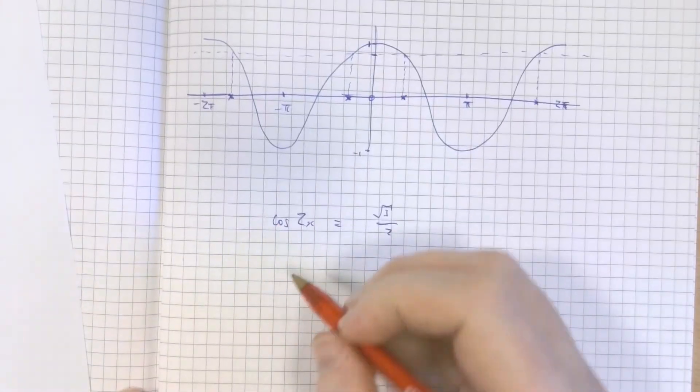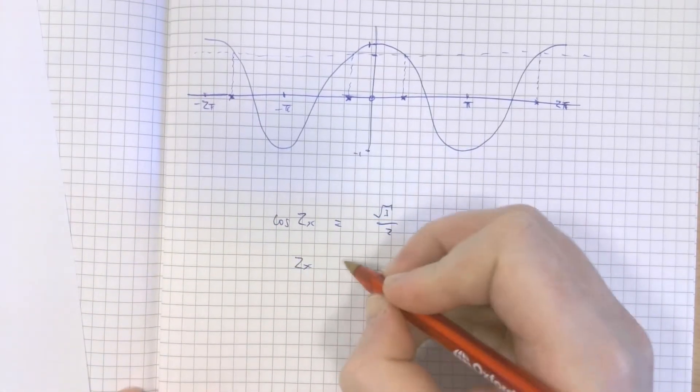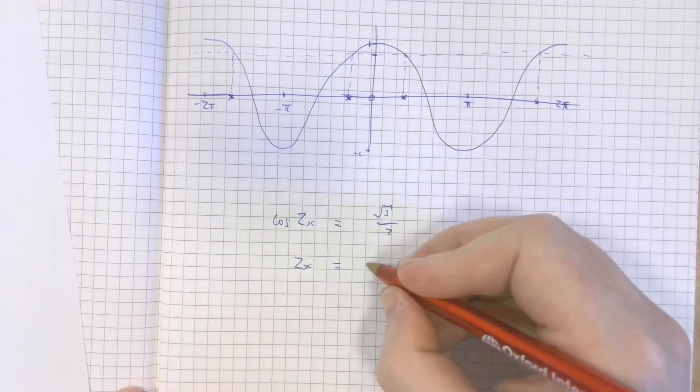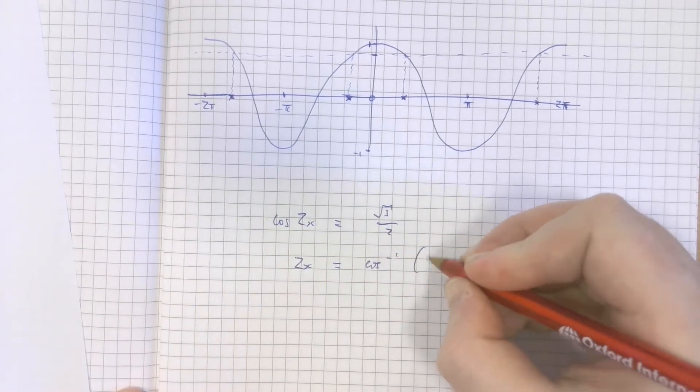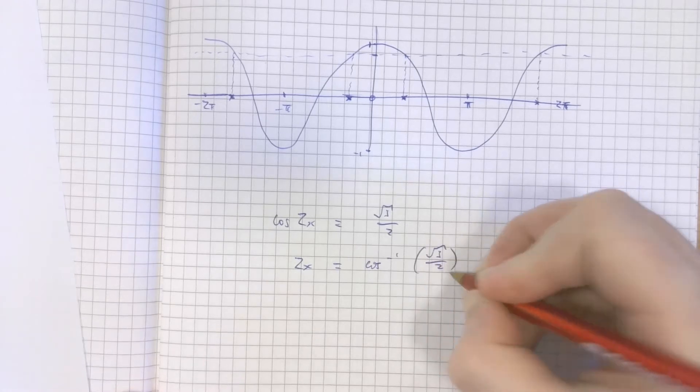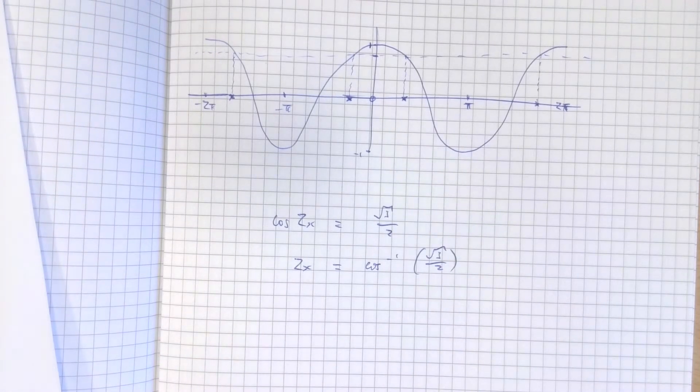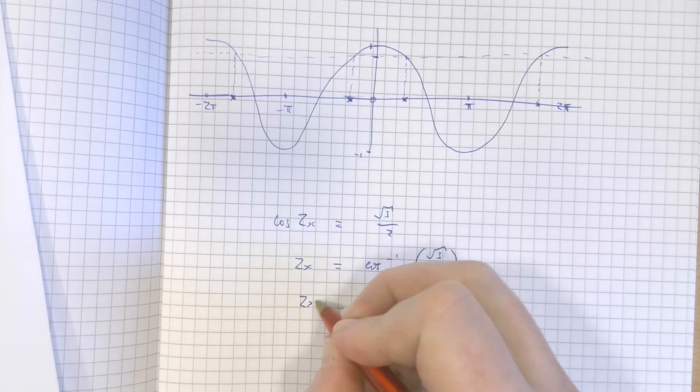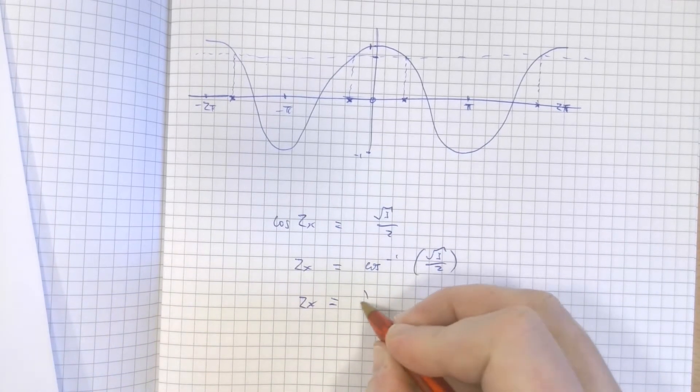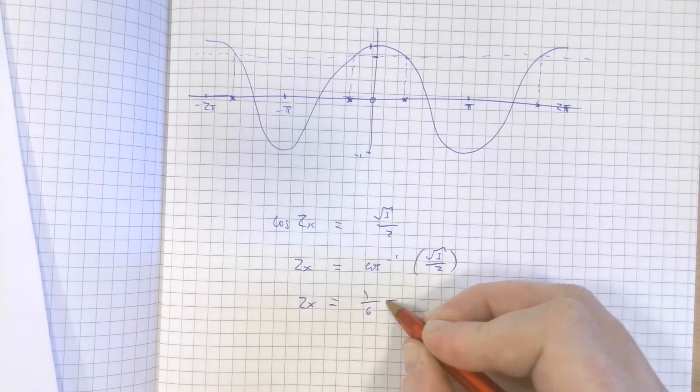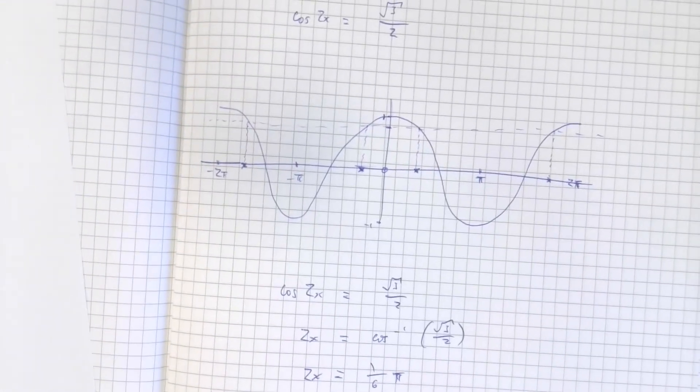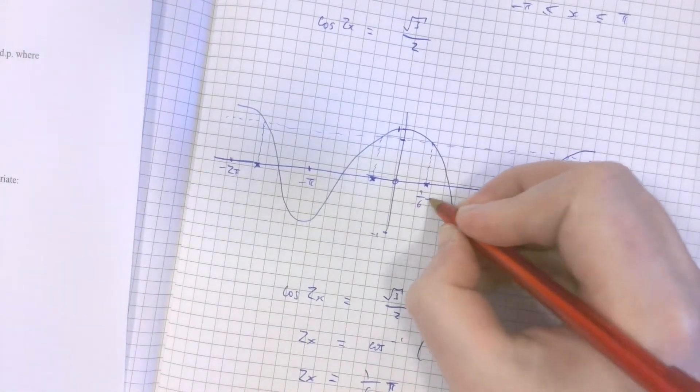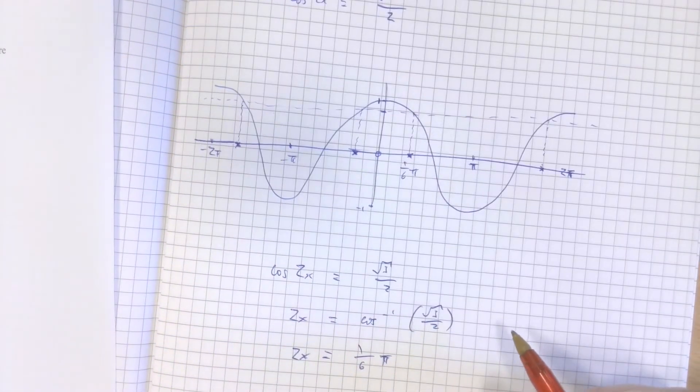To get x on its own, we're going to take inverse cos of both sides. That cancels out the cos and just leaves 2x. And then on the right-hand side, the inverse cos of root 3 over 2. Let's work that out. Inverse cos of root 3 over 2 gives me 2x equals π/6. So effectively, the value of 2x there is π/6.